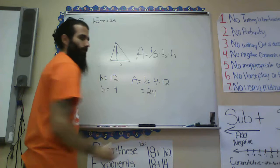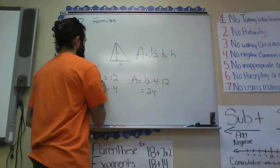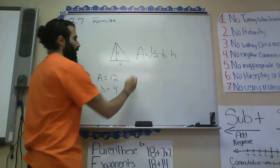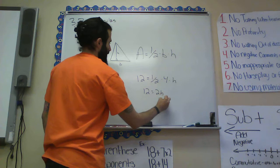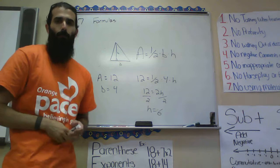They might not give it to you already solved. For example, if the area is 12 and the base is 4, you plug in: 12 equals one-half times 4 times h. Half of 4 is 2, so 12 equals 2h, and dividing by 2 gives you a height of 6.